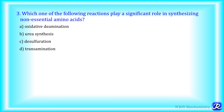MCQ 3: Which of the following reactions plays a significant role in synthesizing non-essential amino acids? Option A: oxidative deamination; option B: urea synthesis; option C: desulfuration reaction; option D: transamination reaction. We have studied that one of the metabolic significances of transamination is synthesis of non-essential amino acids. So the answer is transamination.